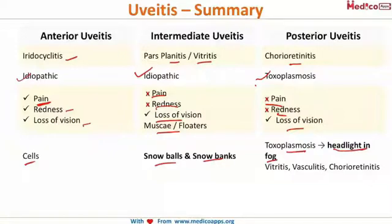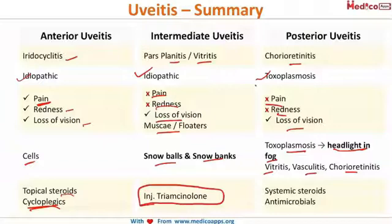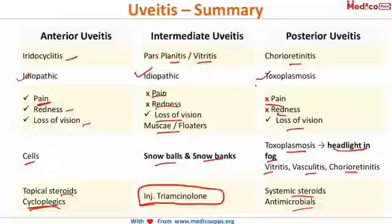Hallmark features: cells in anterior uveitis; snowballs and snowbanking in intermediate uveitis; and headlight-in-fog appearance with vitritis, vasculitis, or chorioretinitis in posterior uveitis. Management: topical steroids and cycloplegics for anterior uveitis; injectable triamcinolone (subconjunctival or subtenon) for intermediate; and antimicrobials with systemic steroids for posterior uveitis.